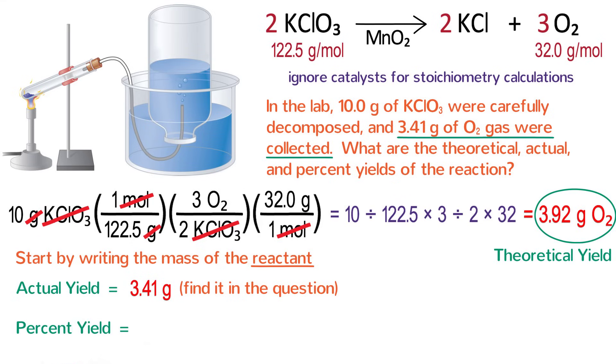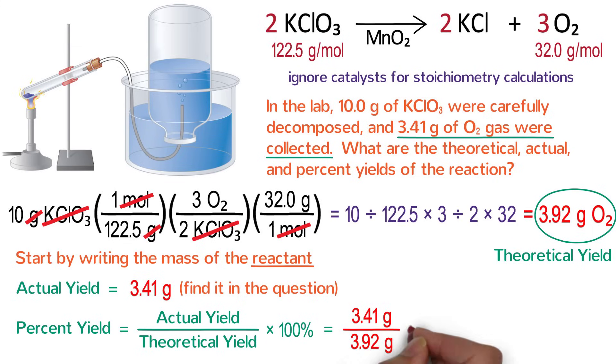The percent yield tells us how well the reaction worked and we calculated by dividing the actual yield by the theoretical yield and multiplying the result by 100 to turn it into a percent. In your calculator type 3.41 divided by 3.92 times 100 which gives us 87% which is actually a pretty good yield as far as chemical reactions go.